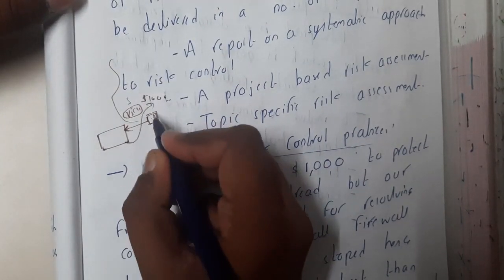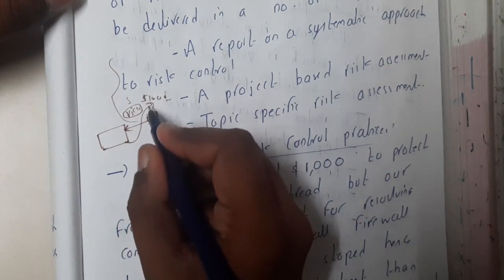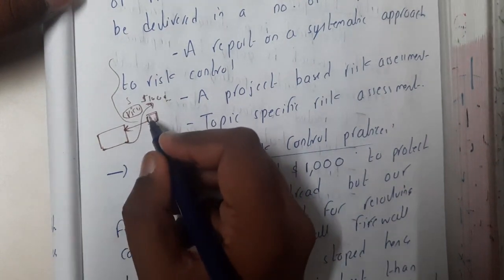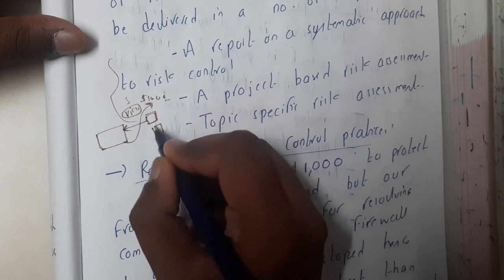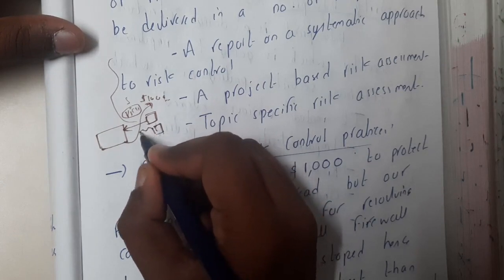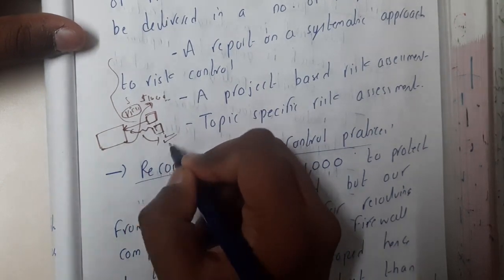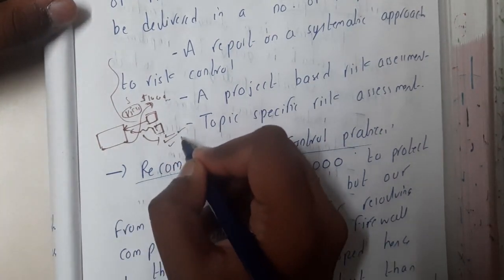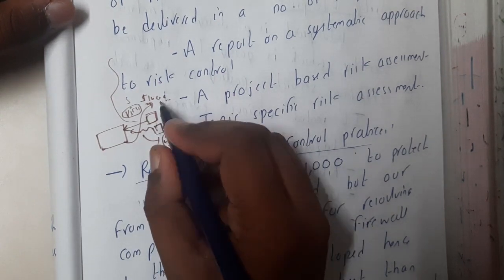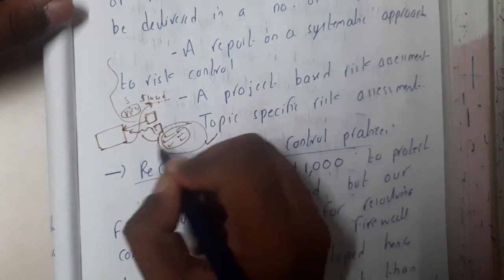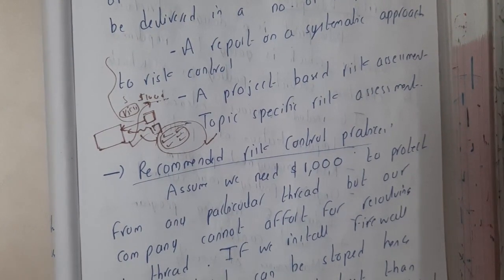Assume you are the company owner and an employee says there is a virus risk and installing a strong firewall will cost a thousand dollars. You might think that seems too costly for a small company. But if the employee explains that along with that single worm, the firewall can filter viruses, worms, DoS attacks, and other things, you would think a thousand dollars for all of that is an advantage and approve it. That is the value of good practices.